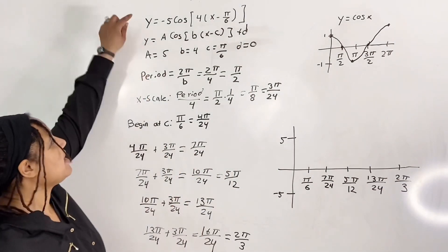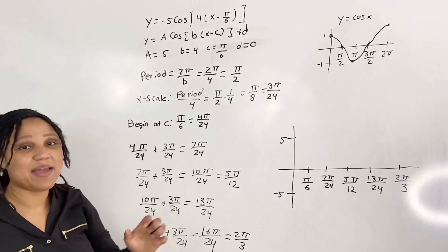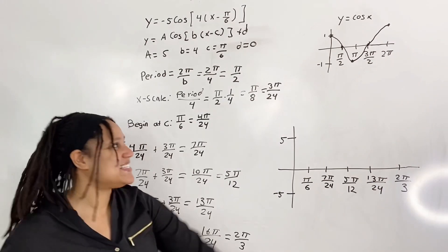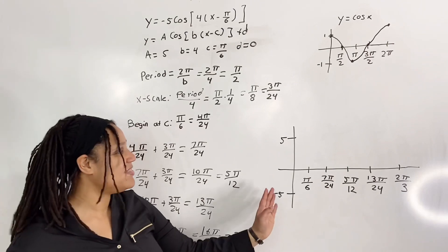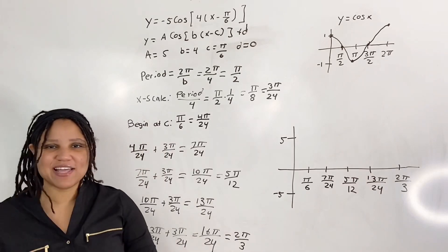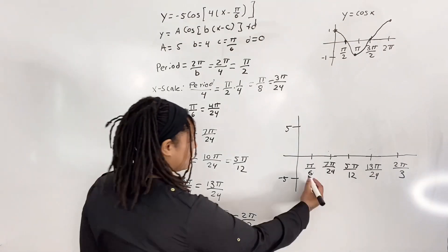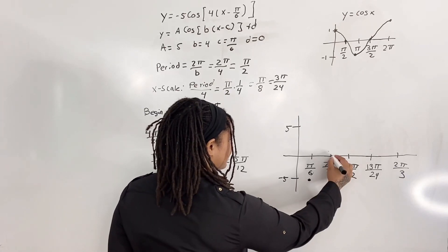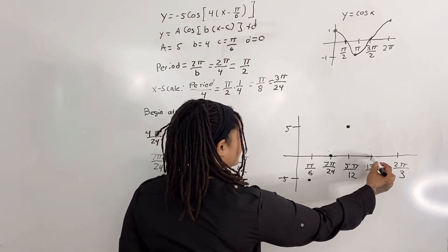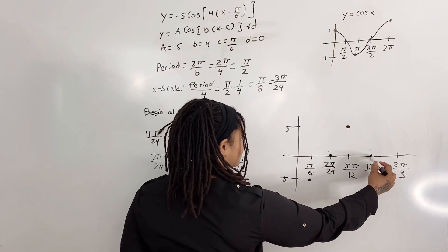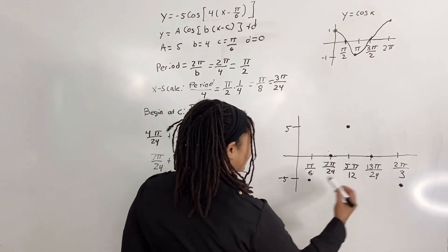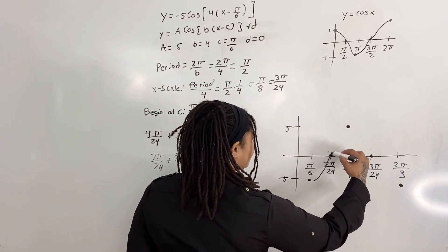Now we apply the reflection about the x-axis, because we have a negative sign on the outside of the cosine function. Instead of starting high, we start low. We begin at pi over 6 at the low point, hit zero at 7 pi over 24, go up to the high at 5 pi over 12, return to zero at 13 pi over 24, and end at the low point at 2 pi over 3.